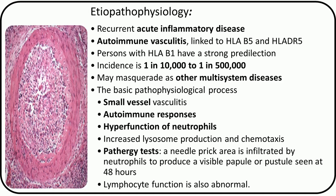The basic pathophysiological process is small vessel vasculitis, autoimmune responses, and hyperfunction of neutrophils. The neutrophils are overactive with increased lysosome production and chemotaxis. Clinically, this can be demonstrated by the pathurgi test, in which a needle prick area is infiltrated by neutrophils to produce a visible papule or pustule seen at 48 hours.